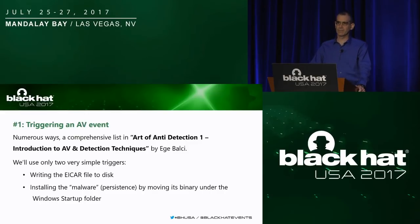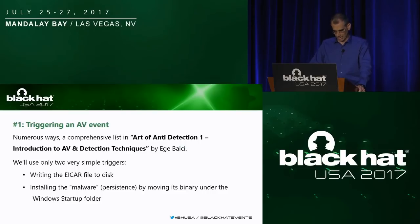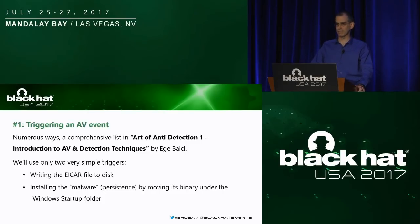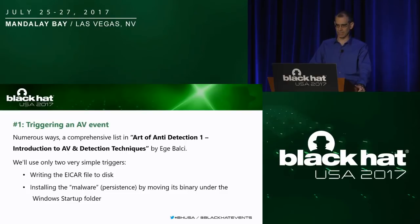One technique is writing the EICAR file to disk — a 68-byte demi-malware that is not a real Windows executable but is supposed to be detected as malware by all antivirus products. The second technique is persisting our malware by moving its binary to the Windows startup folder, simulating the suspicious behavior of an executable that runs every time the computer boots or the user logs in.